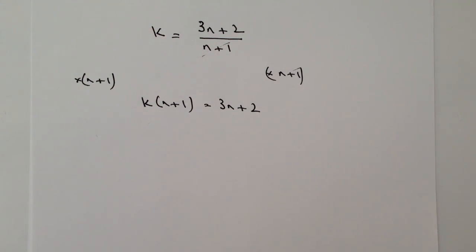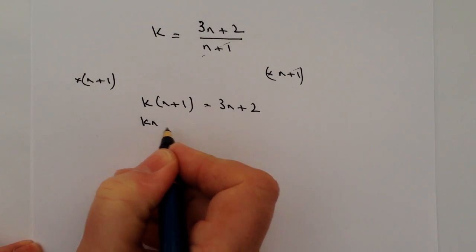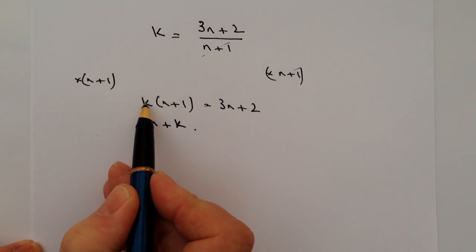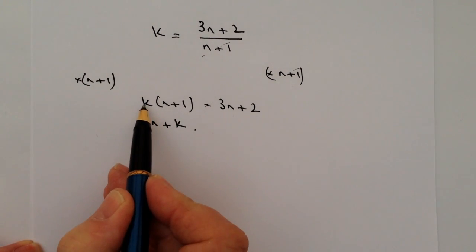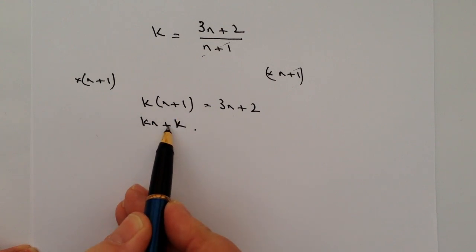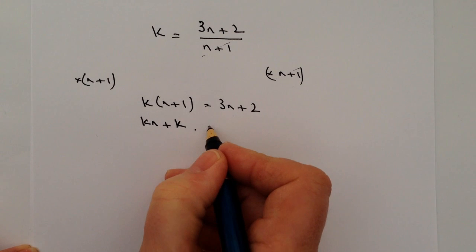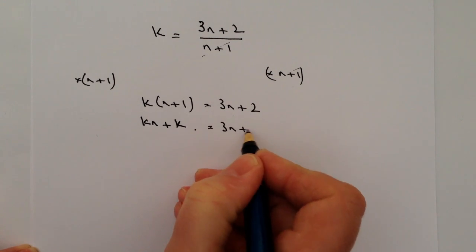Okay, so the next thing is we need to multiply out the brackets. So I'm going to multiply out the left hand side as kn plus k. So remember that k times n is kn, and k times plus 1 is going to be plus 1k, which you just write as k on its own. And that equals 3n plus 2.